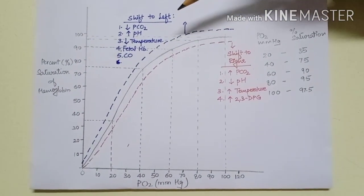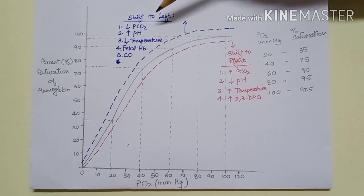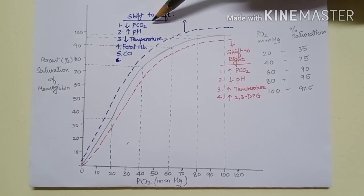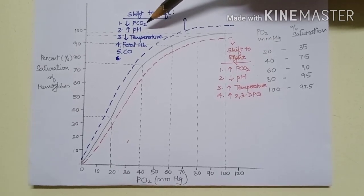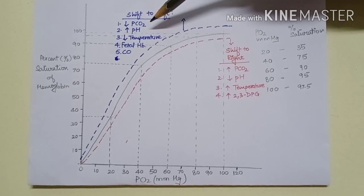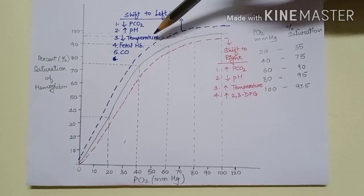Following factors cause shift to left: decrease in PCO2, increase in pH or decrease in H+ concentration, and decrease in temperature.